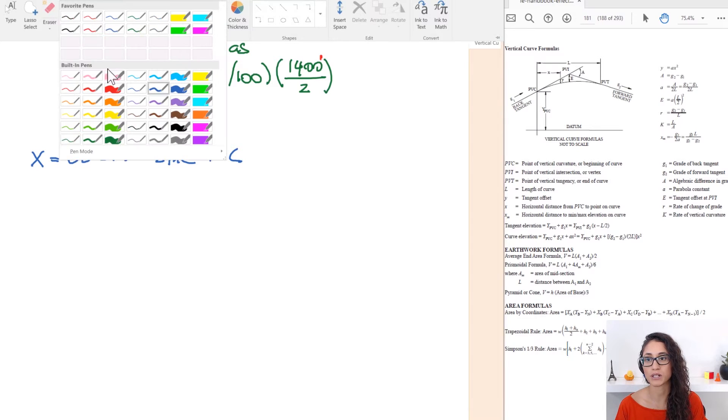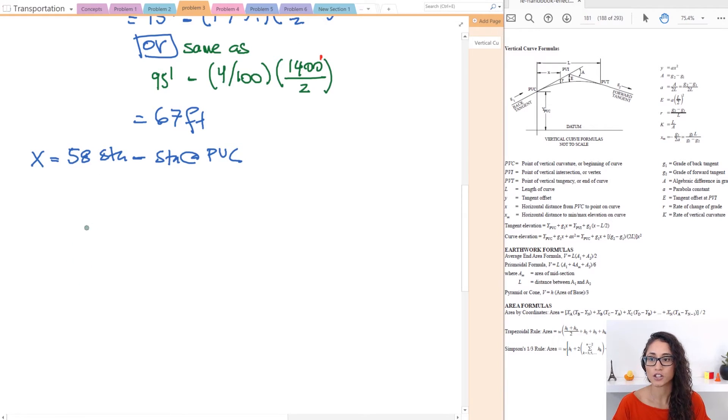So which means I need to calculate PVC first before we can actually solve for X. So let's start, let's pick another color, let's do green. So the station at PVC, again this is not mentioned in the reference handbook so make sure you check out my other video where I provide all the equations that you have to remember. So the station at PVC is equal to the station at PVI minus L over 2. So you take this length, you divide it by 2 and you subtract that so you get the station at PVC.